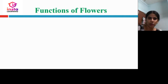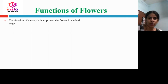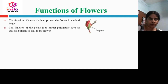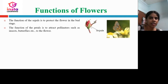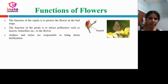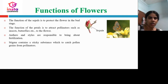The functions of the flower parts: sepals protect the flower in the bud state. Petals attract pollinators such as insects and butterflies to the flower. Anthers and styles are responsible for fertilization. The stigma contains a sticky substance which helps to catch pollen grains from pollinators. After fertilization, the ovule becomes the seed of the fruit.